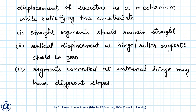When the beam displaces like a mechanism it should satisfy the following constraints: straight segments of the beam should remain straight, the vertical displacement at hinge or roller supports should be zero, and the segments connected at an internal hinge may have different slopes.